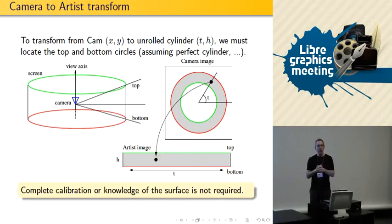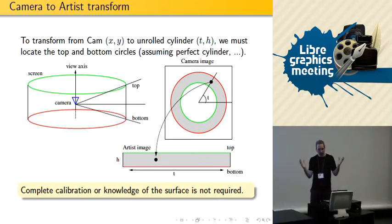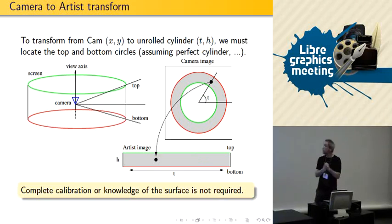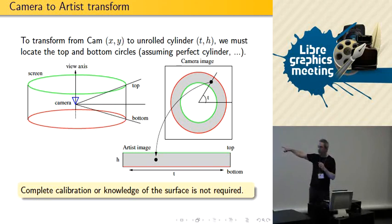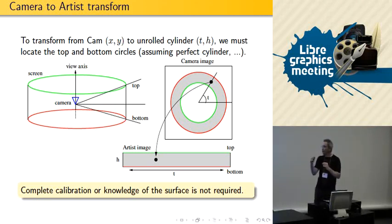One important thing: as people using tools like Hugin for panoramas know, you need to calibrate the camera — know the field of view and other characteristics like radial distortion. Since everything is 2D, all you have to specify is the inside and outside of the donut there in green and red, and that will map to the unrolled cylinder. There's very little calibration required if you want to do basic mapping.